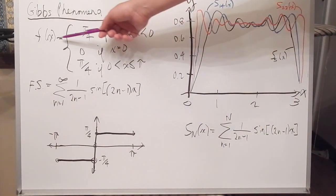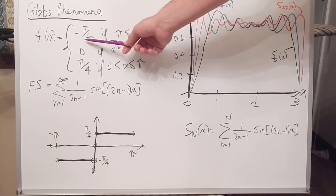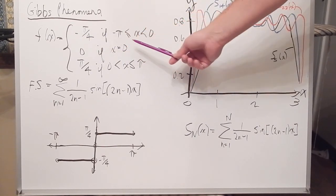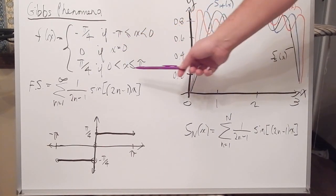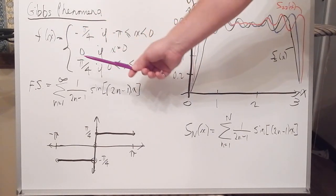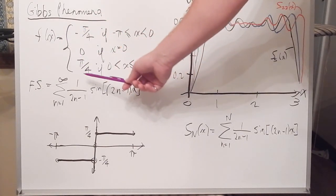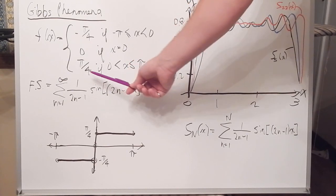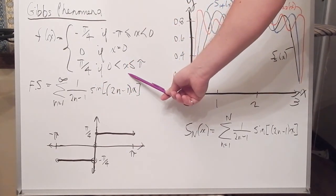So let's suppose we have a function f that equals negative pi over 4 when x is between negative pi and zero, and f equals zero when x equals zero, and f equals pi over 4 when x is between zero and pi.